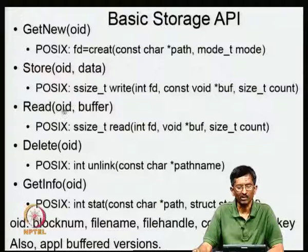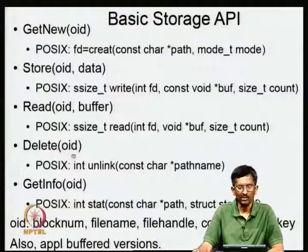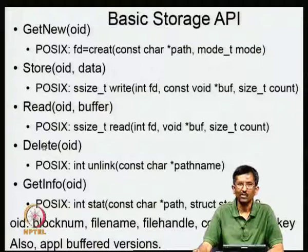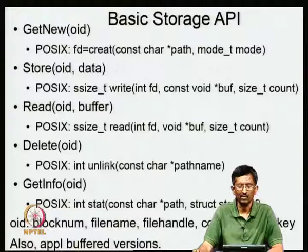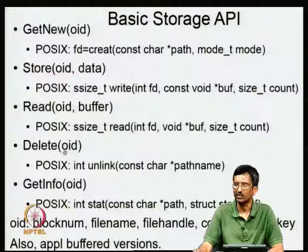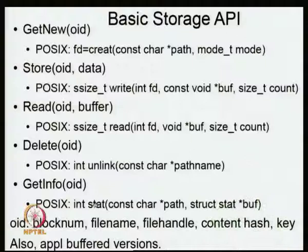Similarly for read, you specify where the contents are stored into — a buffer — and how big you want to read and how much you actually succeed. When it comes to delete, it turns out you have something called unlink, which does the deletion. This is not identical to delete because in POSIX there can be multiple names referring to the same object. When you unlink, all you are doing is reducing the reference count by 1. If the reference count equals 0, then you actually delete. You can also call stat to get information about the object, putting the metadata into a buffer.